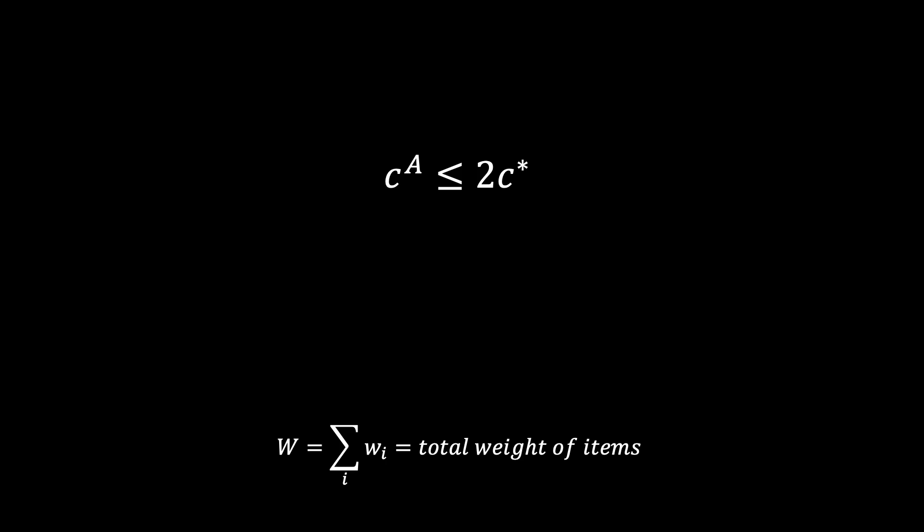To prove the approximation ratio of 2, we will show that C star is at least the total weight of the items, and that CA is less than 2 times the total weight of the items plus 1. The first part is easy. You may want to pause the video here and think about why C star must be at least W.